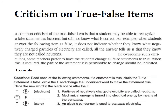Criticism of true-false items: A common criticism is that a student may recognize a false statement as incorrect but still not know what is correct. For example, when students mark an item as false, it does not indicate whether they know the correct answer. To overcome this, some teachers require students to change all false statements to true, with the part permissible to change indicated. For example: 'Circle T if true, circle F if false, and change the underlined word to make the statement true, placing the new word in the blank space after the F.'